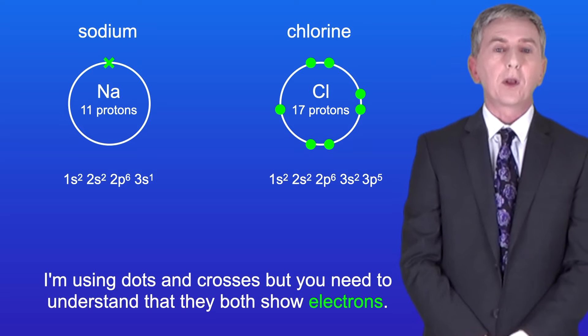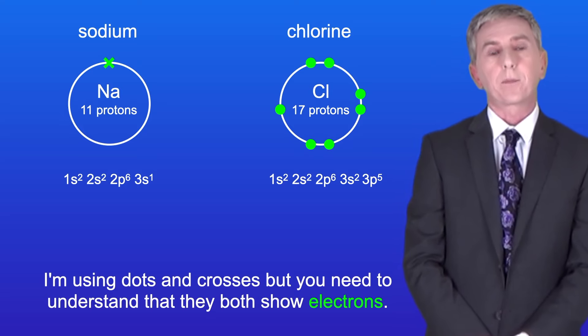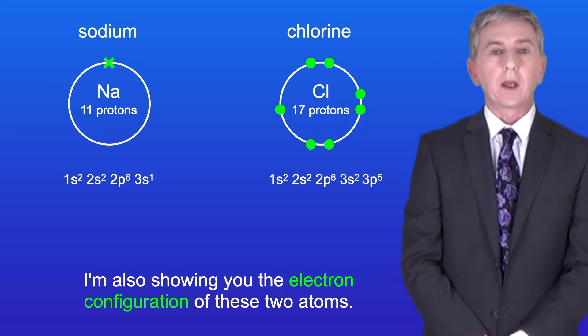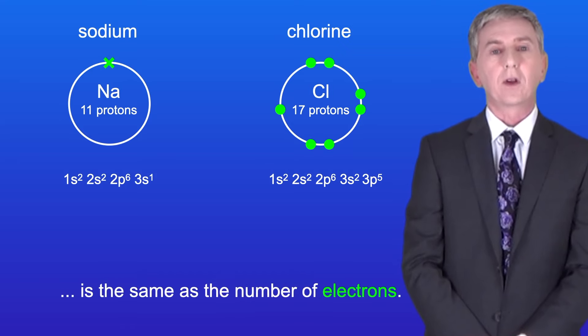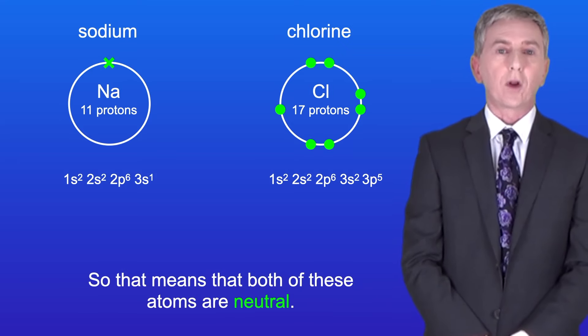I'm using dots and crosses but you need to understand that they both show electrons. I'm also showing you the electron configuration of these two atoms. In both cases the number of protons in the nucleus is the same as the number of electrons, so that means that both of these atoms are neutral.